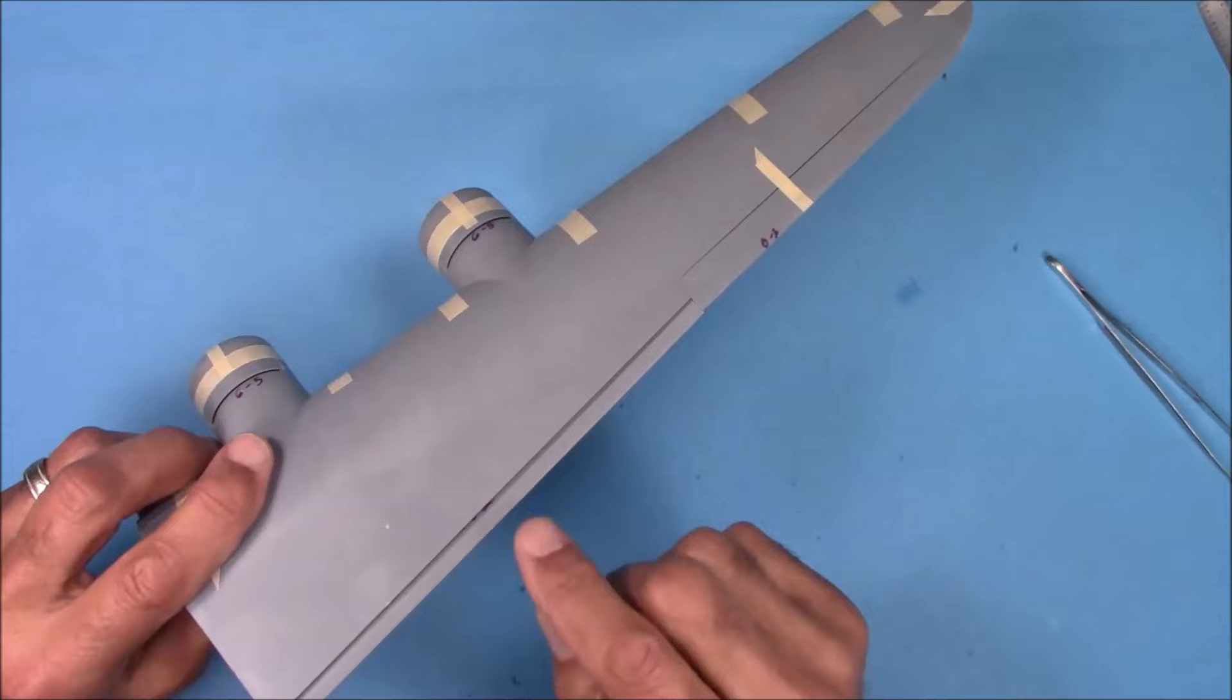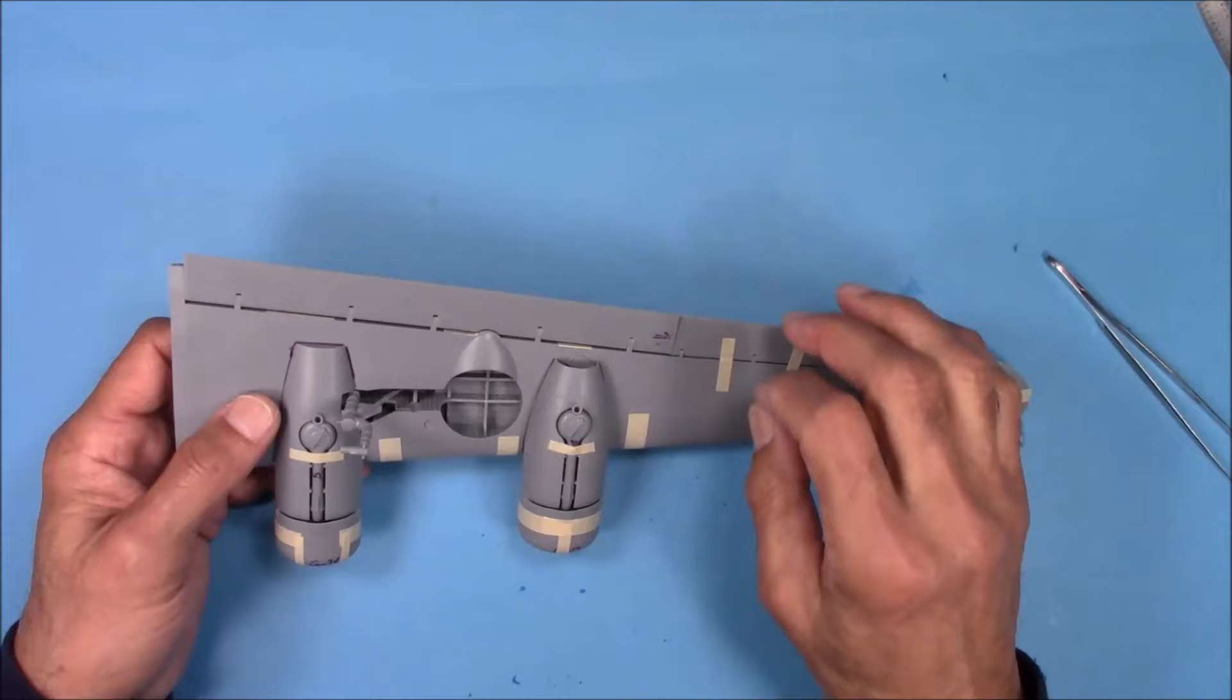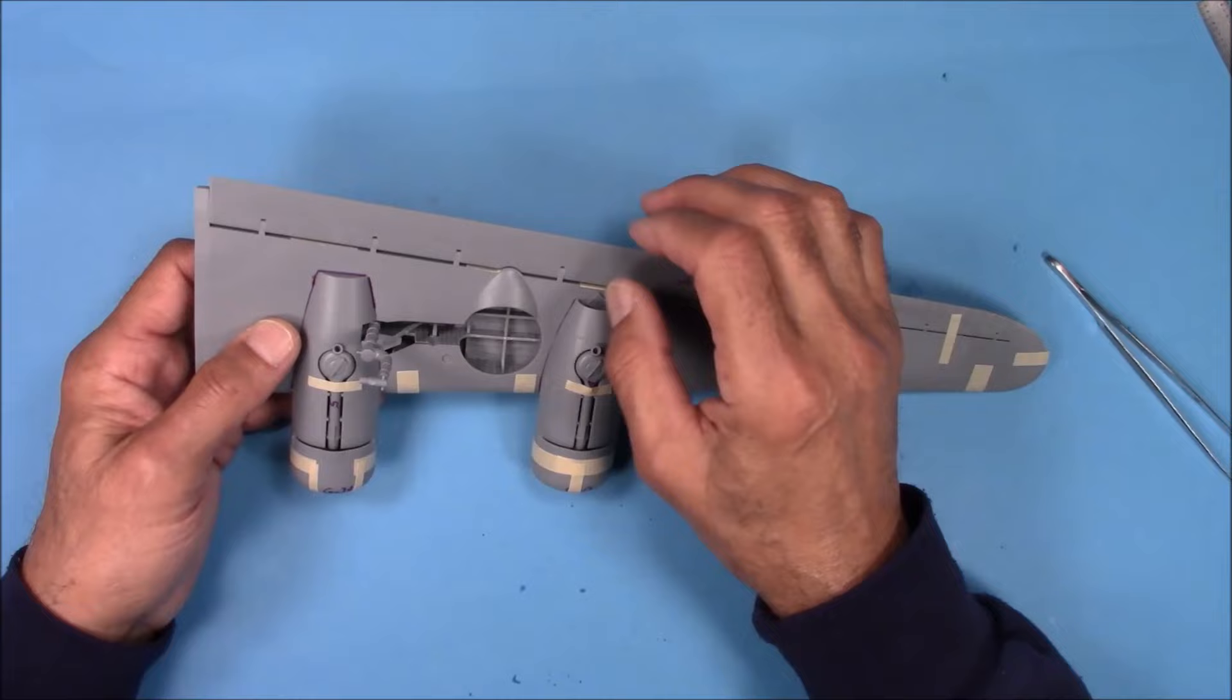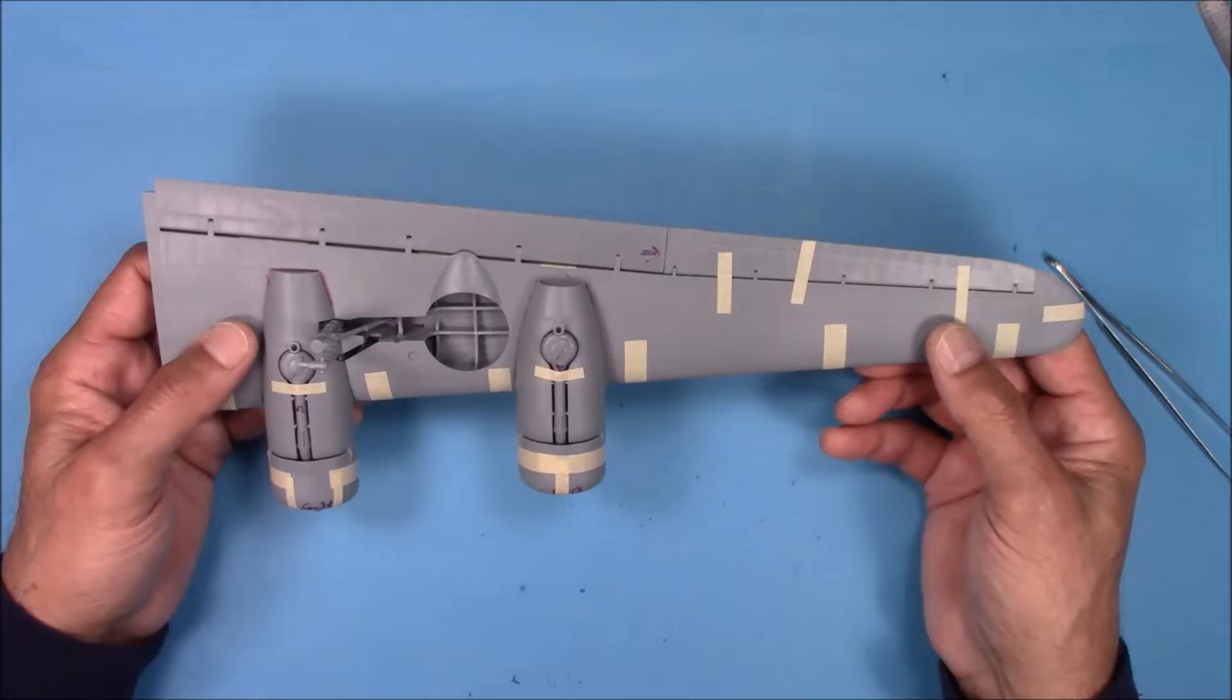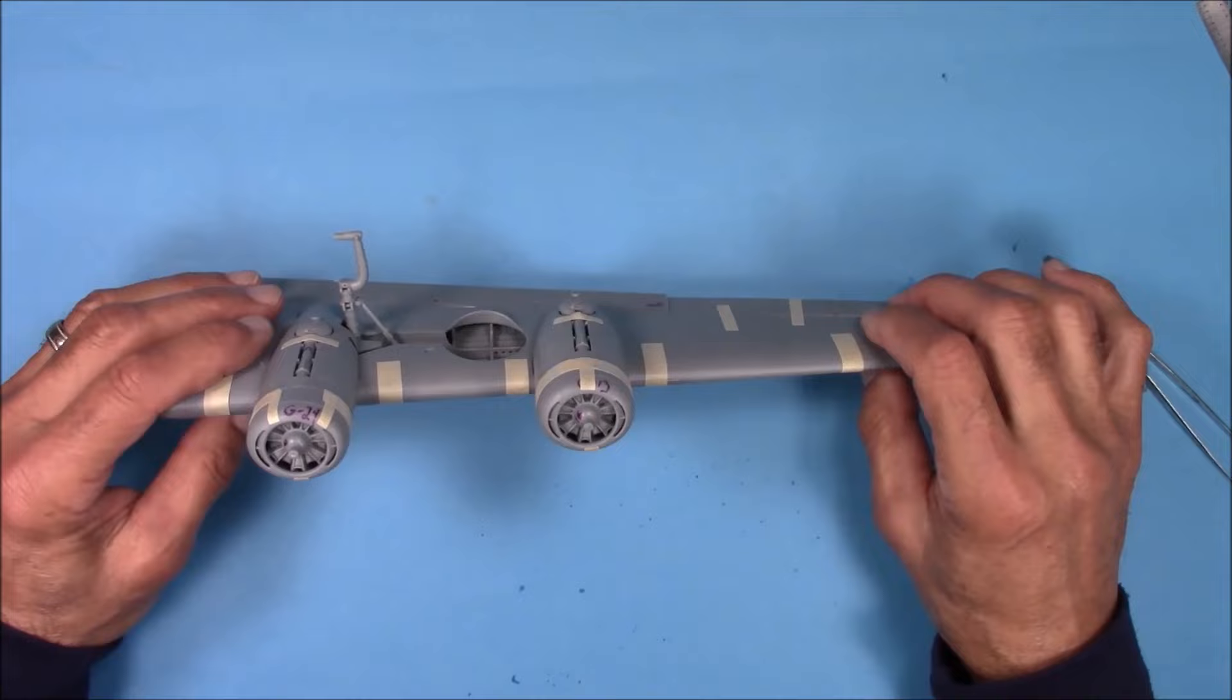With the flaps, if you're going to position these partially open, there's some mold punch outs on the inside you're going to have to get rid of. This flap goes out and down, so be mindful of that. It doesn't just go down like on a B-17, they actually protrude aft and then down. You need to replace these engines, they don't do this model justice.